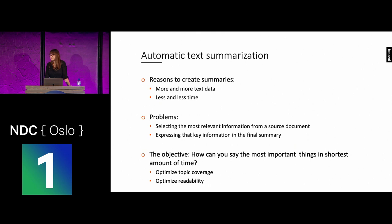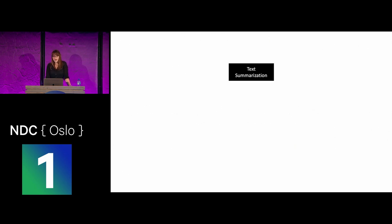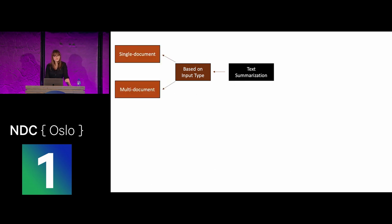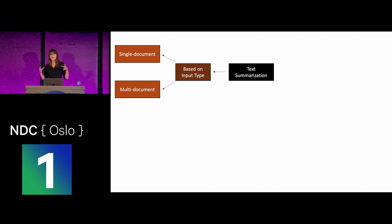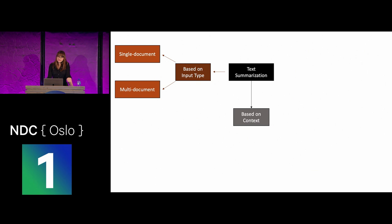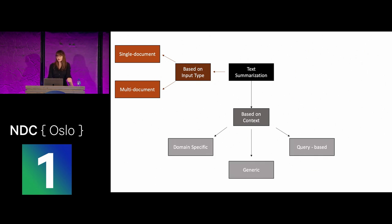There are different types of text summarization. One way to look at them is based on the input type. When thinking about text summarization based on input type, there are two types: single-document or multi-document. In single-document, we have only one document that we're trying to summarize. In multi-document, we have multiple documents and the final summary should contain information from all of them. There is also a division based on context, and here we have domain-specific, generic, and query-based summaries.